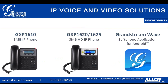Among our most recent products are the GXP1610 and the GXP1620 and 1625 — our new series of small to medium-sized business IP phones. These are one- and two-line IP phones designed to give you every feature you need and nothing that you don't. The 1620 and 1625 have full HD audio support and EHS support for Plantronics headsets. They can be provisioned via any popular method, including zero configuration with our UCM series IP PBX.